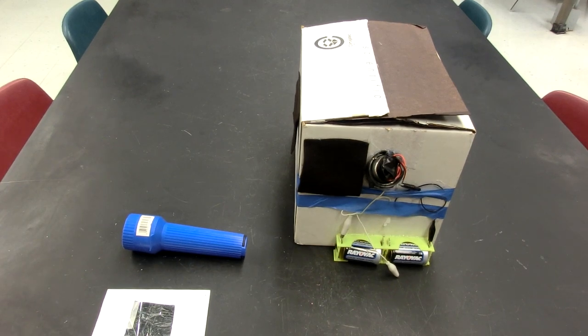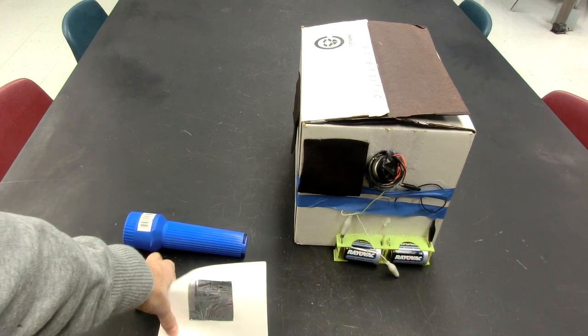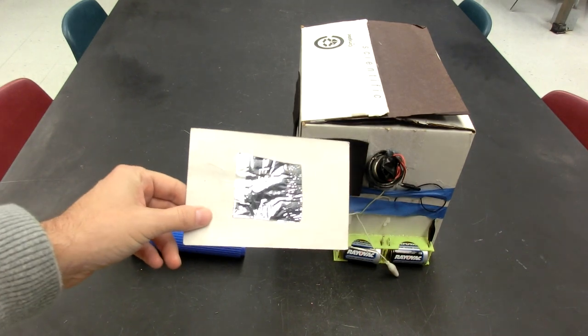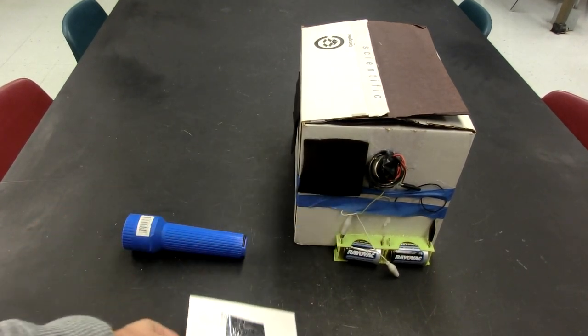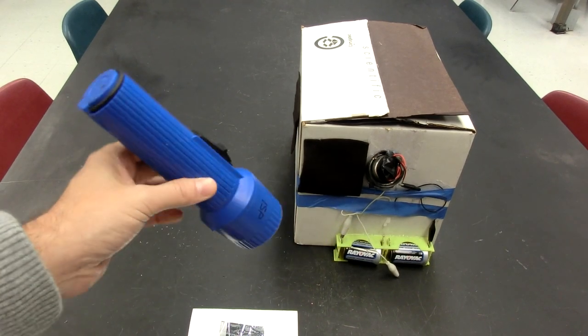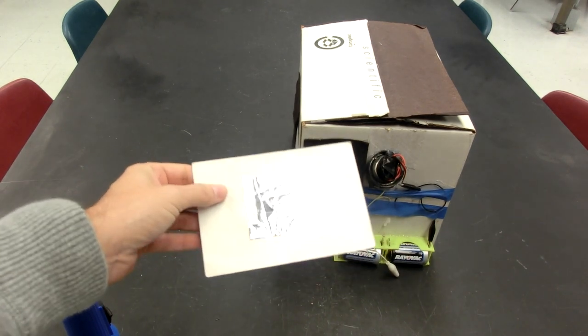We have this activity in the physics for education majors course where they use one of these - a mylar square on a white sheet of paper. They shine a flashlight at it and then look to see who can see this as shiny.